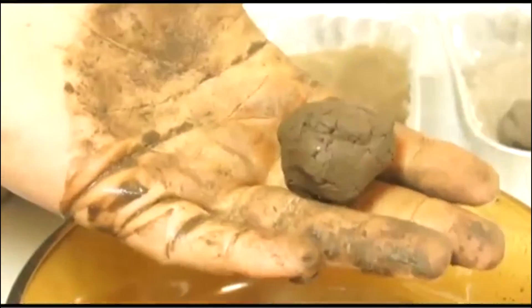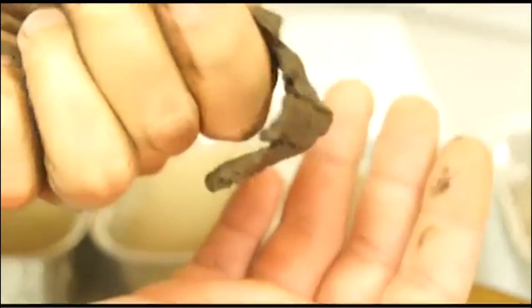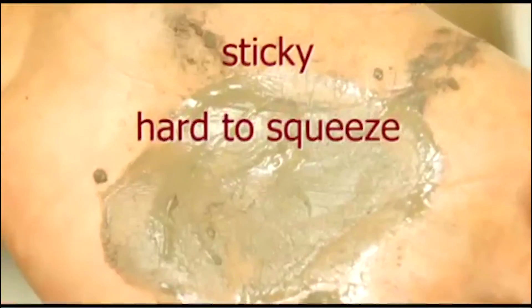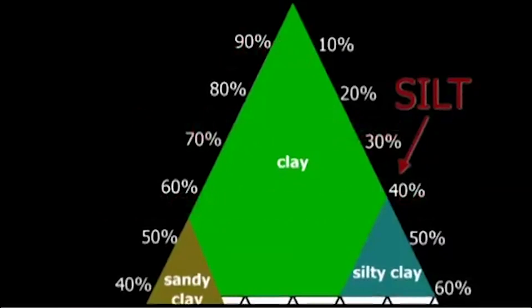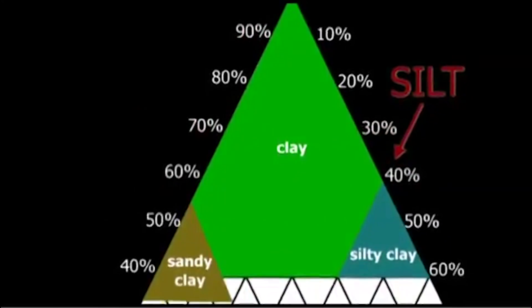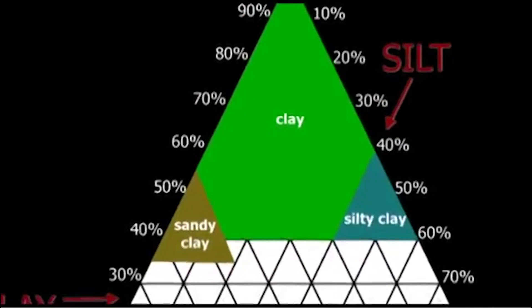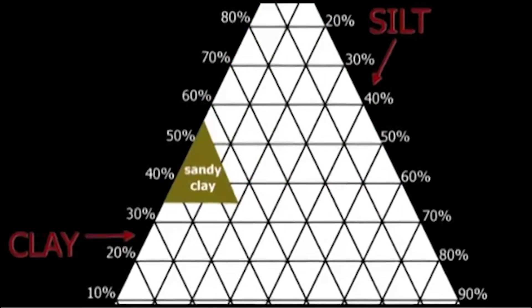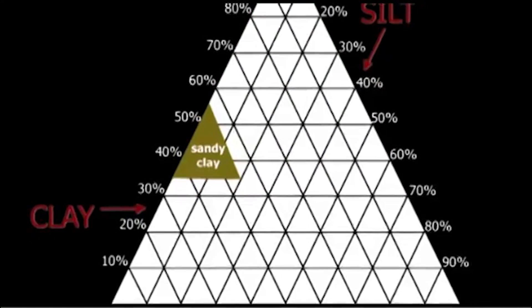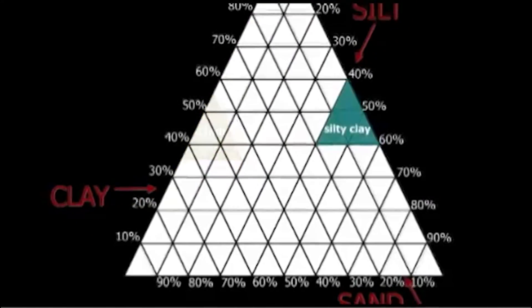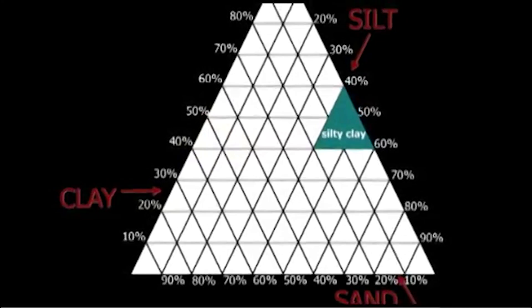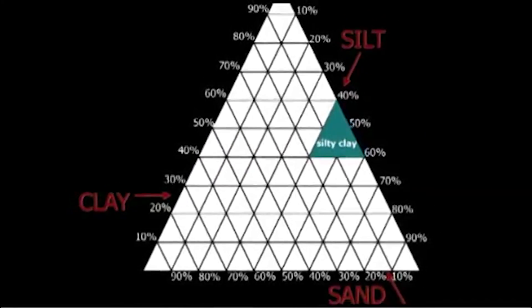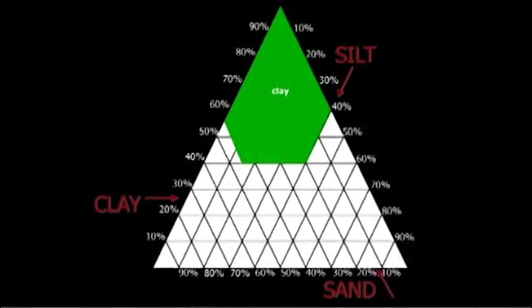If the wet soil easily retains the shape of a ball, can also be squeezed into a long ribbon, and feels sticky, hard to squeeze, and shines when rubbed, it's at least 35% clay and is somewhere at the top of the chart. If, in addition, it feels very gritty, it contains more sand than silt and is probably a sandy clay. If it feels very smooth, it's probably a silty clay, and if it feels only a little gritty, it's a clay.